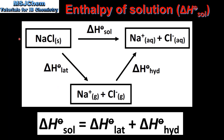In this slide we look at an energy cycle that can be used to calculate the enthalpy change of solution. According to this energy cycle there are two ways to go from one mole of solid sodium chloride to one mole of aqueous sodium ions and one mole of aqueous chloride ions. The direct route is the enthalpy change of solution. The indirect route starts with the lattice enthalpy to produce gaseous ions, which are then hydrated to give aqueous ions. If we apply Hess's law, the enthalpy change of solution is equal to the lattice enthalpy plus the sum of the enthalpy of hydration values of the gaseous ions.